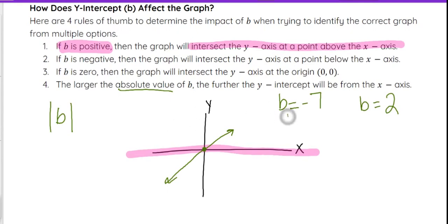If we had a b value of 2 that we wanted to compare to a b value of negative 7, if I look at the absolute value of b in each of these cases, it's going to be the positive version of those numbers. So positive 7 and positive 2.